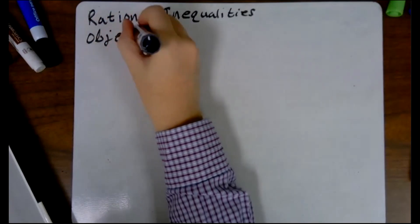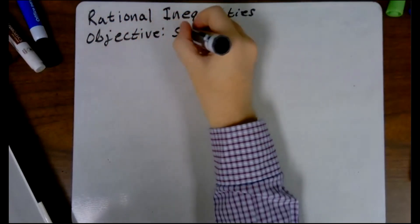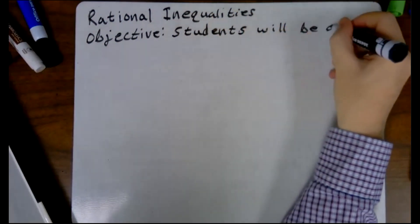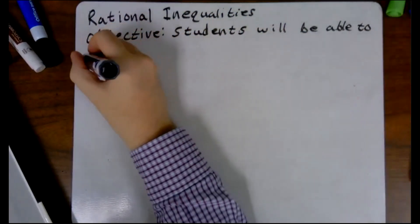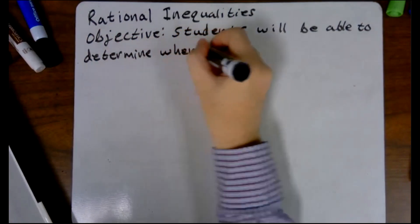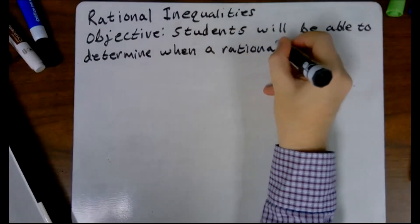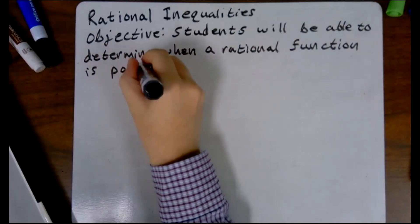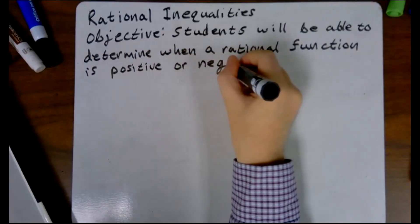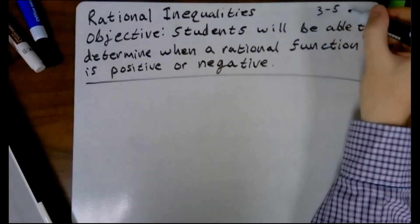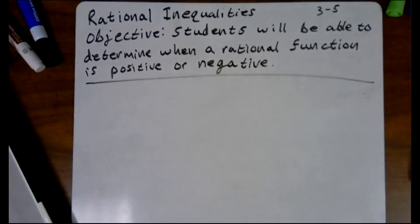Our objective: students will be able to determine when a rational function is positive or negative. It's the 5th of March. Take a moment to give the title and objective a copy down.